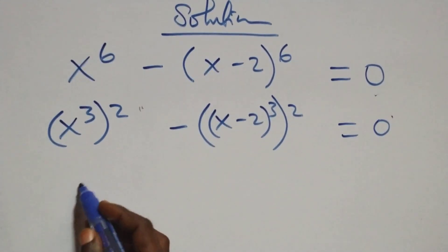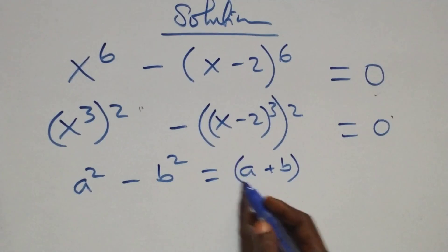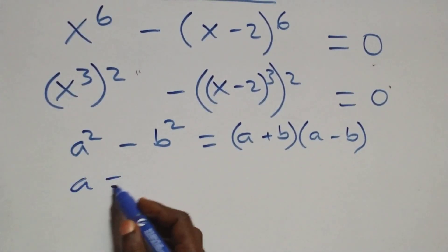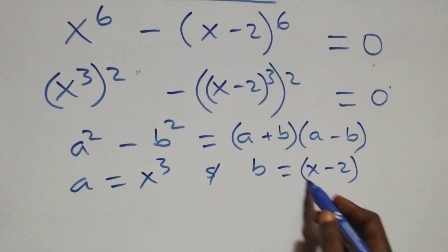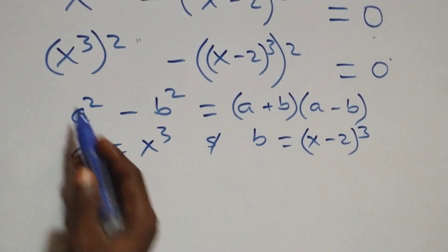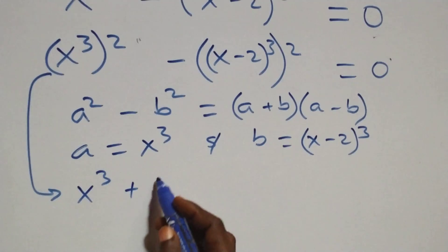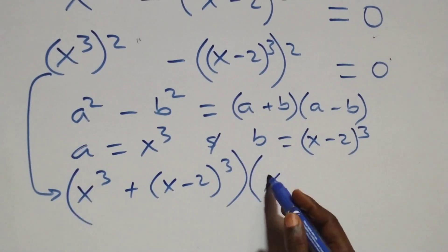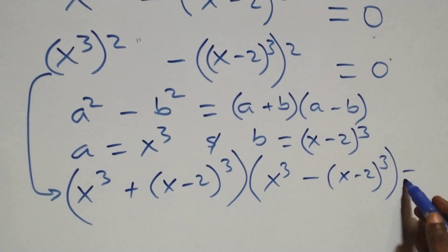We follow the identity a squared minus b squared equals a plus b times a minus b, where a stands as x raised to the power 3 and b stands as x minus 2 raised to the power 3. This gives us x³ plus (x−2)³ times x³ minus (x−2)³, equals 0.